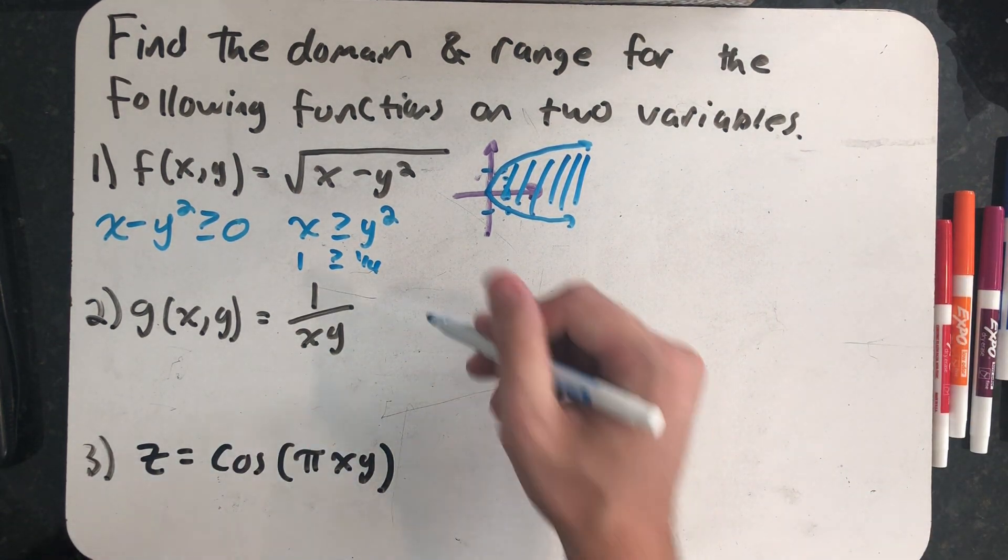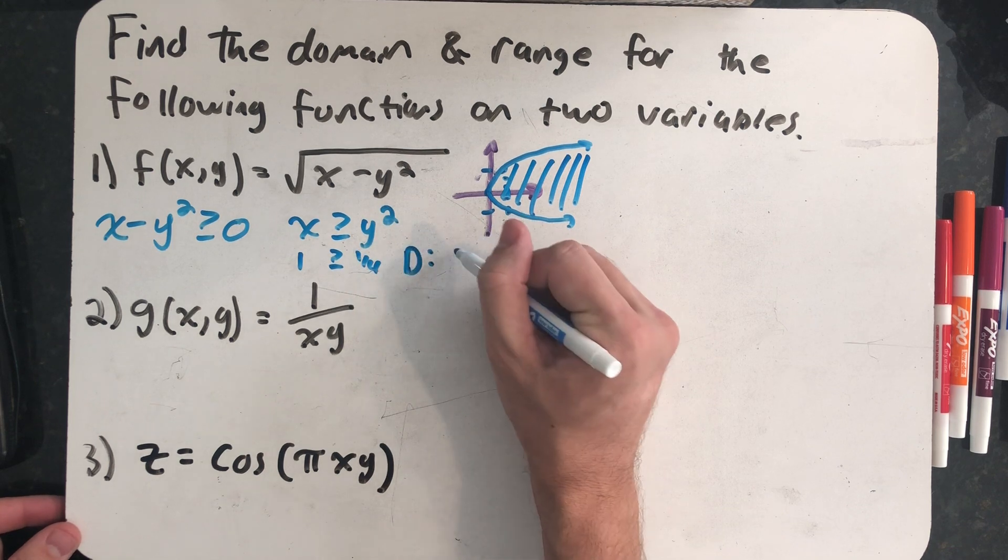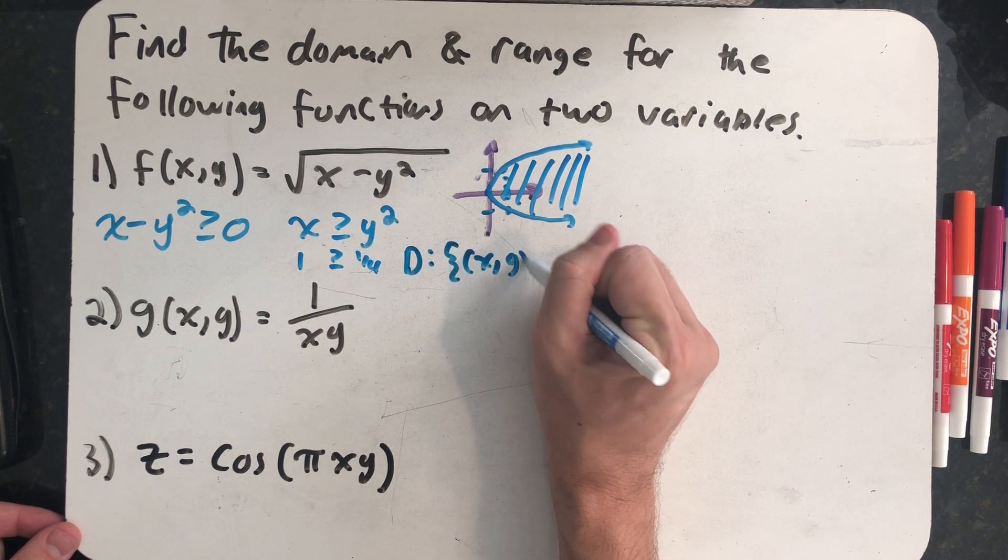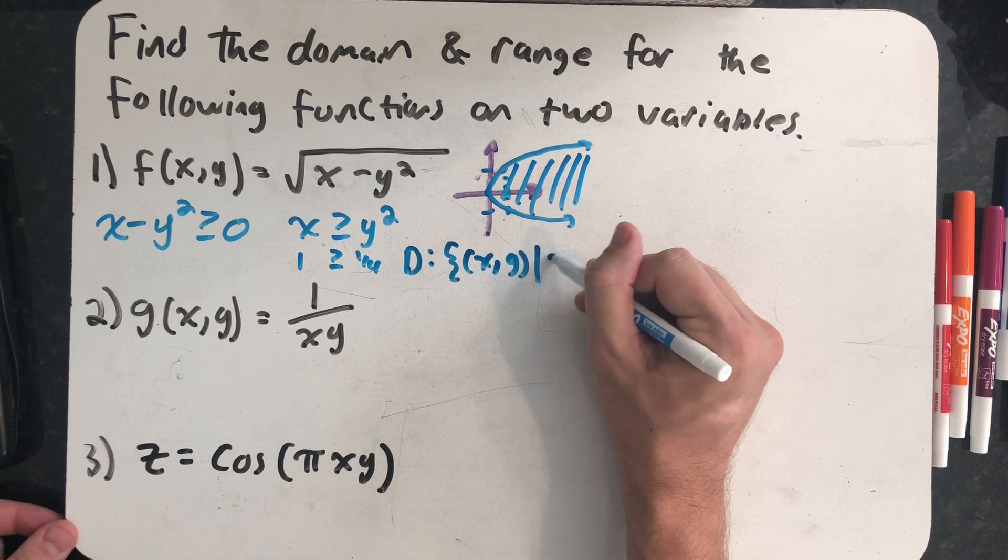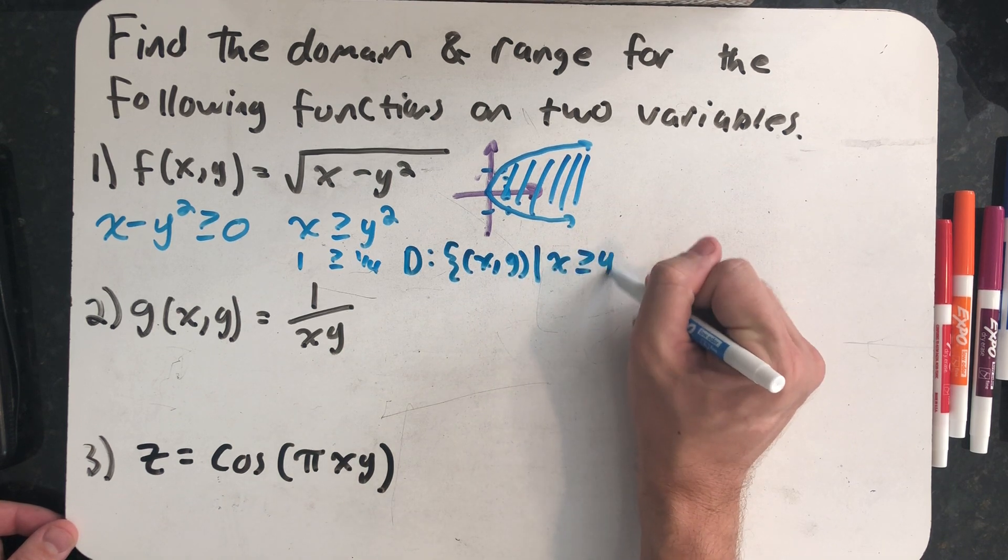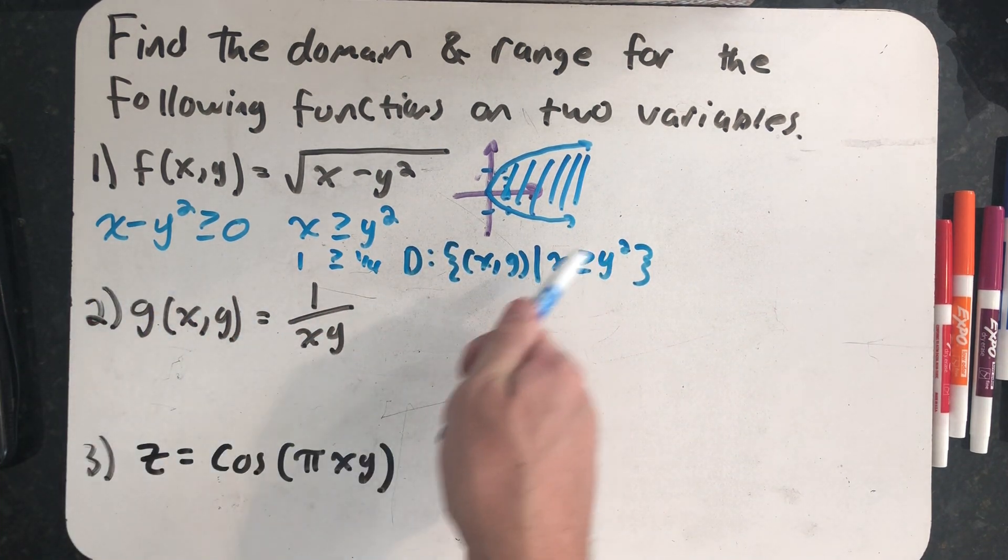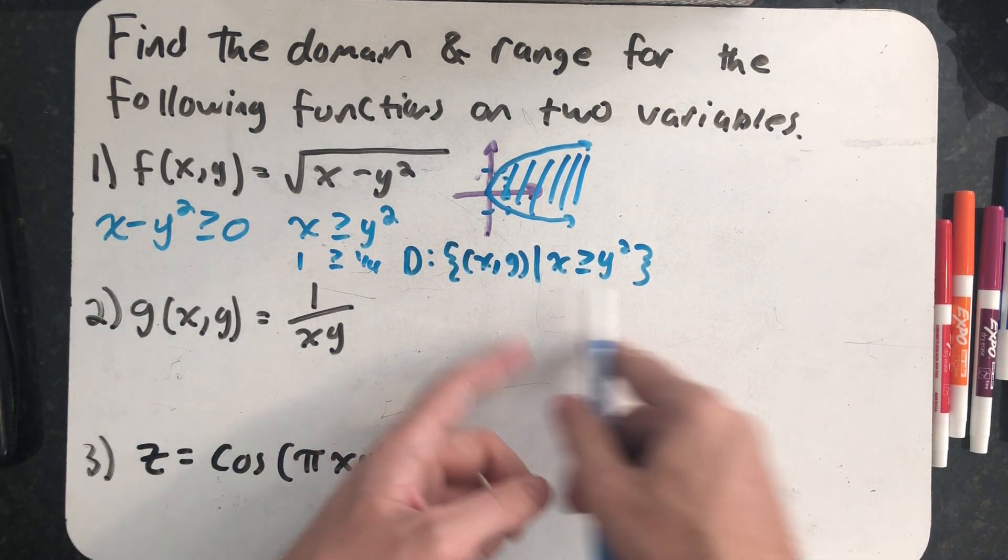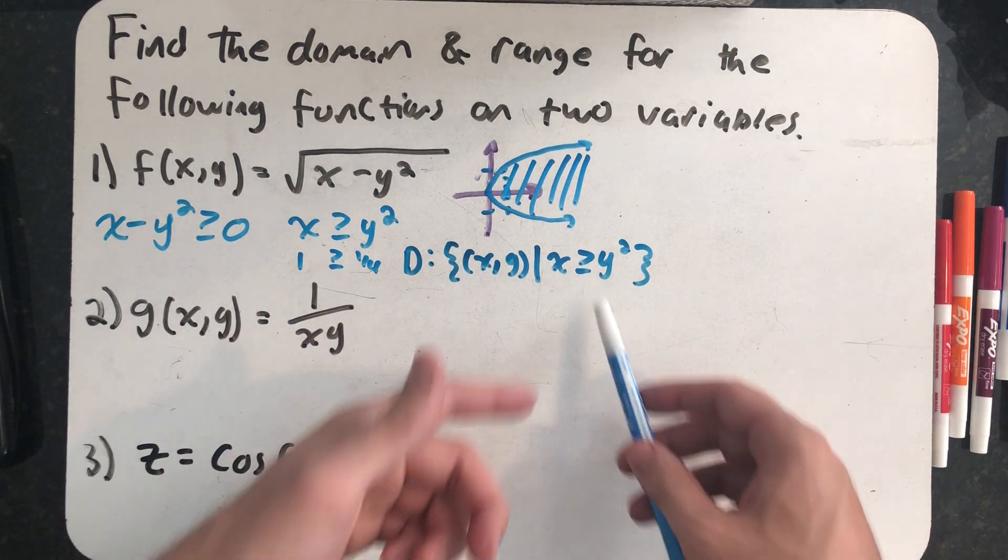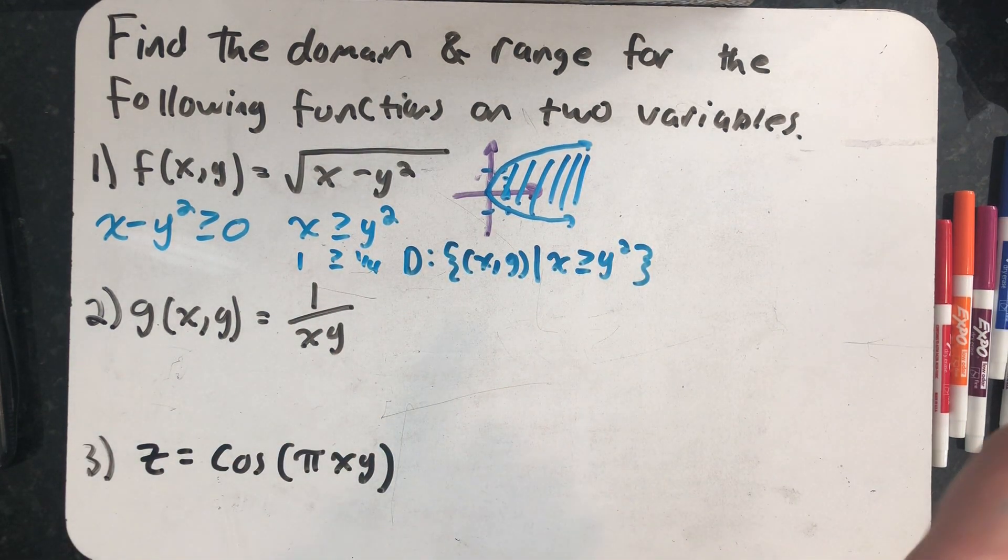Now when someone asks me for a domain I feel like I need to tell them what it is in symbols. So I'm going to say that these are all the (x,y)'s such that x is bigger than or equal to y squared. I could actually write this down as my rule, but I feel better writing it down this way because whoever comes across and reads this, I hope they're going to think about this parabola.